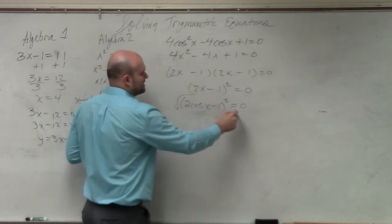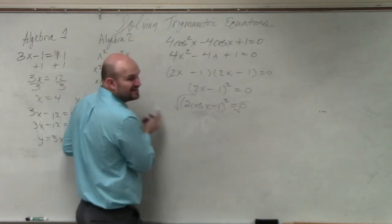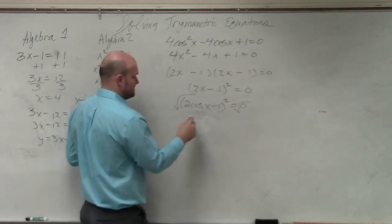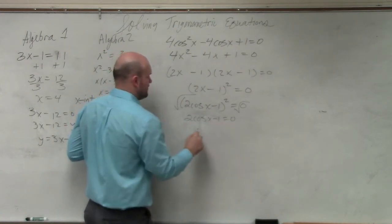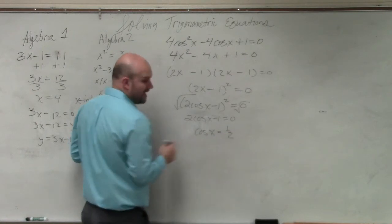So I root both sides. Yes, you can introduce the plus or minus, but 0 is not positive or negative, so it doesn't really matter. So you have 2 cosine of x minus 1 equals 0. Cosine of x equals positive 1 half.